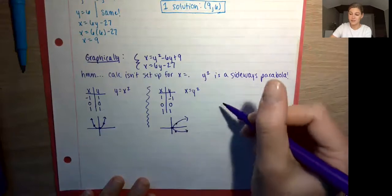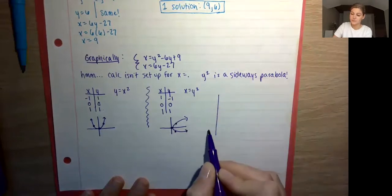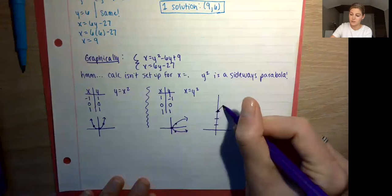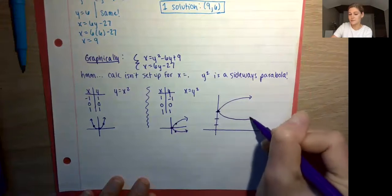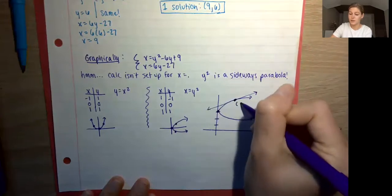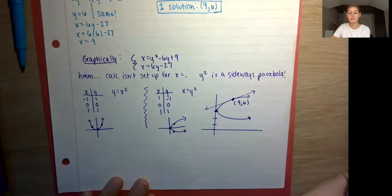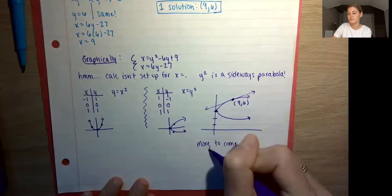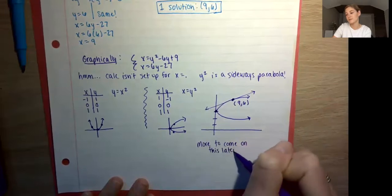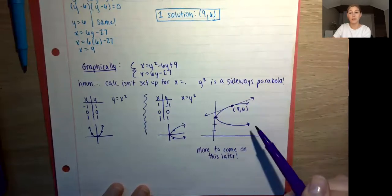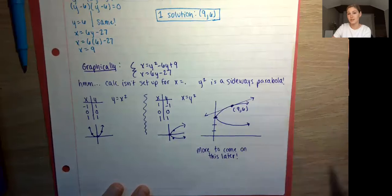The graph of this system would look something like this, with our one solution being the point (9, 6). We don't expect you to know how to graph a sideways parabola yet — there's more to come on this later. But this helps us see why we got one solution: a sideways parabola with our line intersecting at just one point, (9, 6).